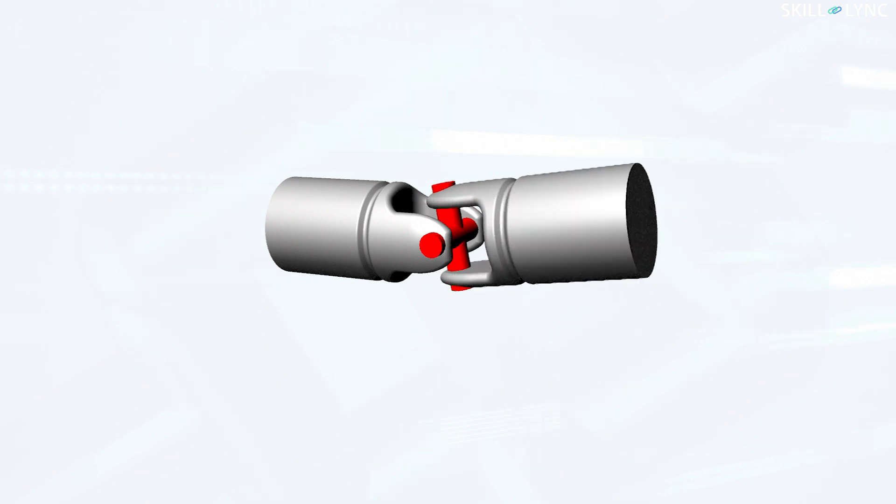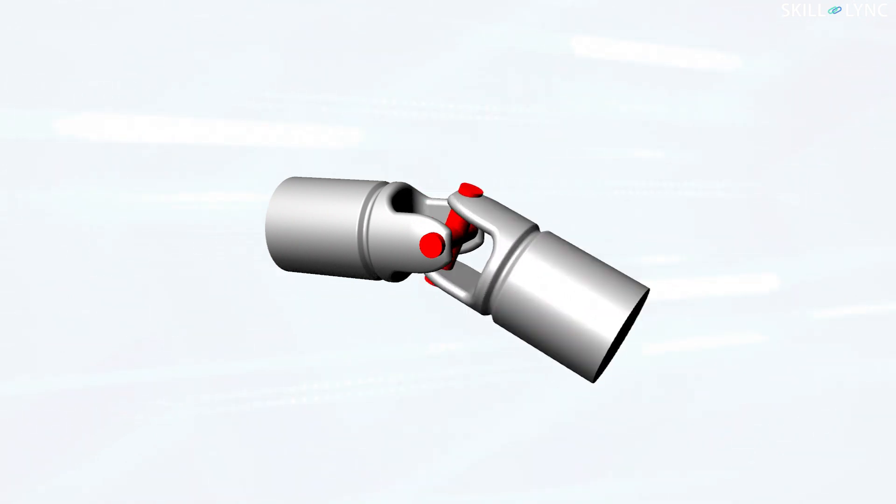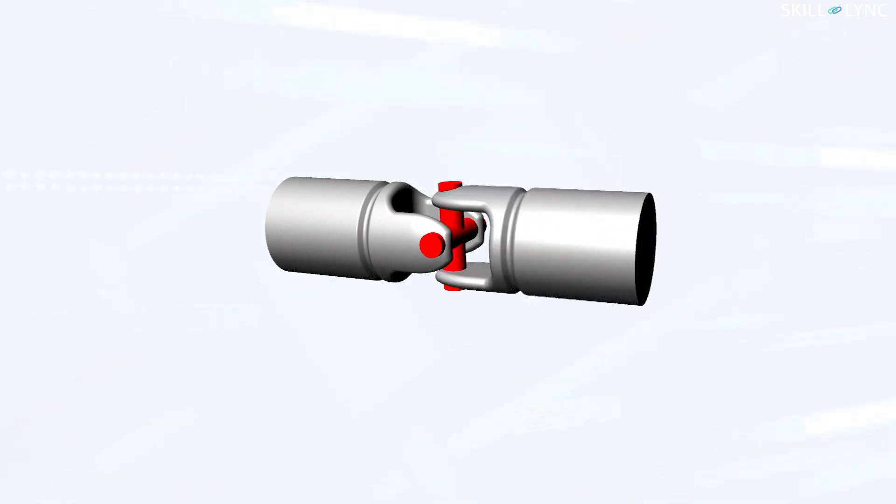This peculiar arrangement of the yoke and the cross member makes the coupling transmit motion even when they are inclined.